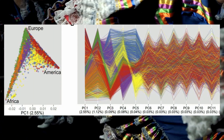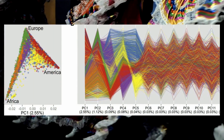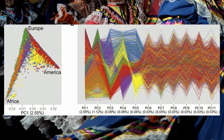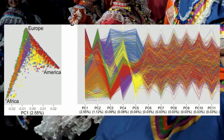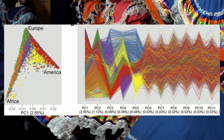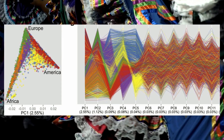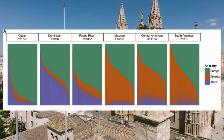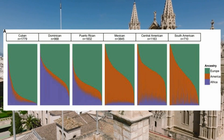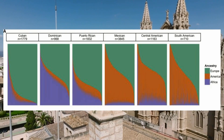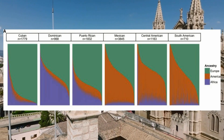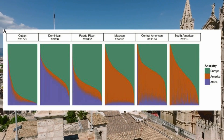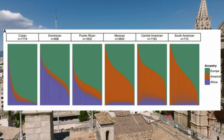Even within the same background group, like Mexicans, the amount of Amerindian ancestry varied depending on where the participants were recruited, showing that there's a lot of diversity even within specific Hispanic groups. The study examined the differences in ancestry proportions—Amerindian, European, and African—within six self-identified Hispanic groups, focusing on both the X chromosome and the autosomes.